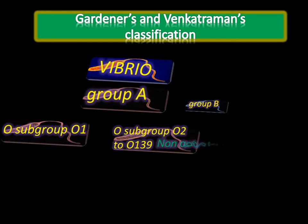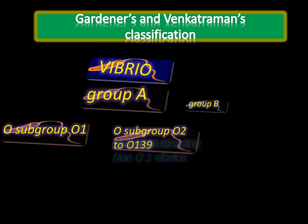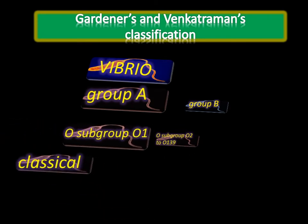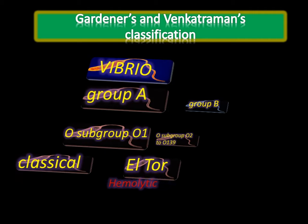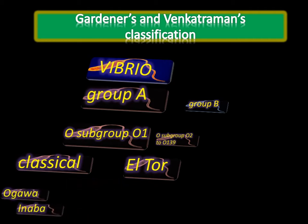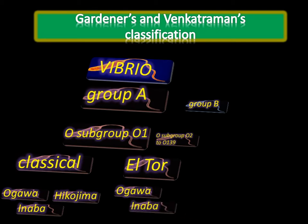Based on O antigen, group A is divided into O subgroup 1 and O subgroup 2 to 139. Vibrio cholerae belongs to O subgroup 1. O subgroup 2 to 139 consists of non-agglutinating vibrio. O subgroup 1 is divided into classical and El Tor forms. Classical are non-hemolytic, whereas El Tor are hemolytic. Classical has been further divided into Ogawa, Inaba, and Hikojima serotypes.